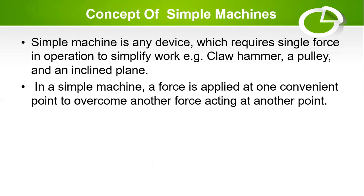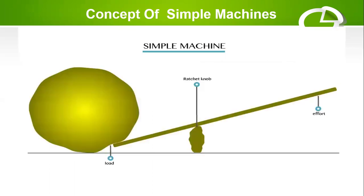In a simple machine, a force is applied at one convenient point just to overcome another force acting on another point. That's simply the mechanism of a simple machine.